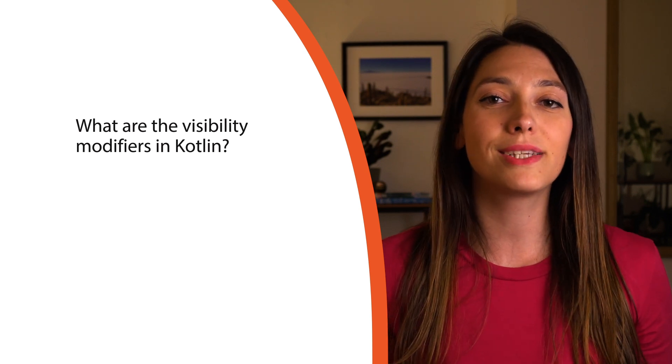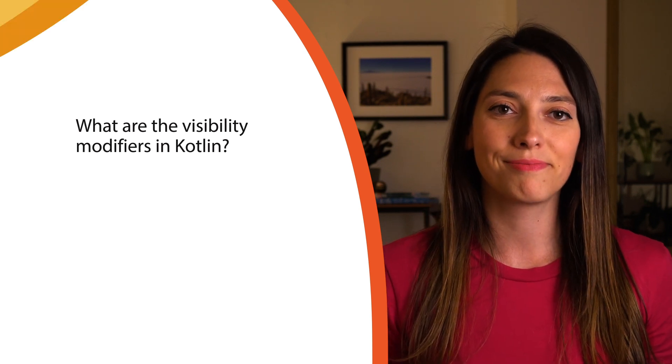What are the visibility modifiers in Kotlin? Visibility modifiers are modifiers that can be appended to a class, interface, property, or function in Kotlin. It is used to define where it is visible and from where it can be accessed. There are four visibility modifiers in Kotlin: private, protected, internal, and public.